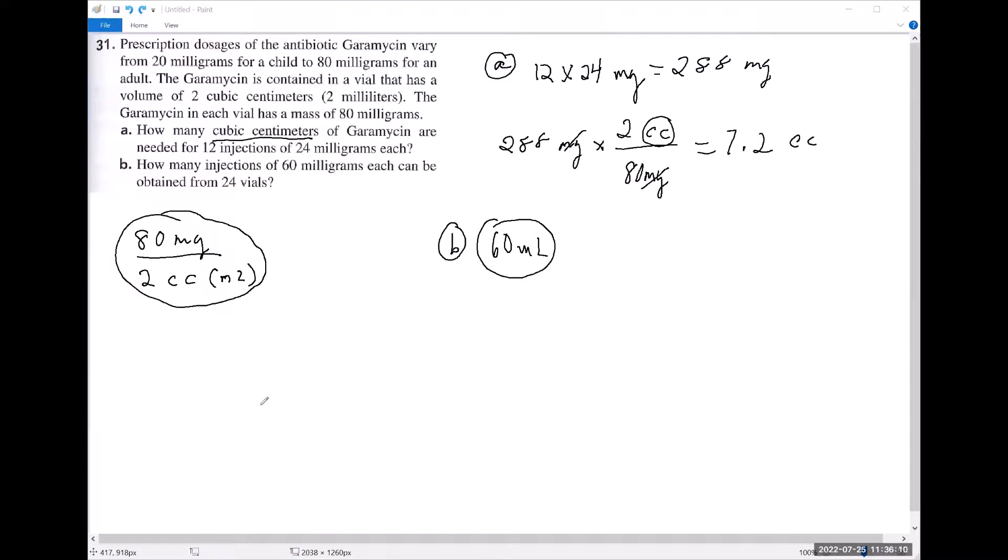We're going to start by writing down the fact that we have 24 vials. What we're going to do is recognize that in one vial there are 80 milligrams. So 80 milligrams per vial.